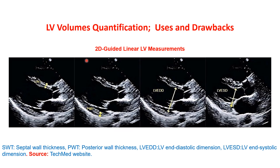This is a nice example of 2D-guided linear left ventricular measurements. We assess the septal and posterior wall thickness in 2D, the left ventricular end-diastolic diameter, and the left ventricular end-systolic diameter to calculate the left ventricular ejection fraction. This is the recommended method by the European Association of Cardiovascular Imaging from the parasternal long axis view.